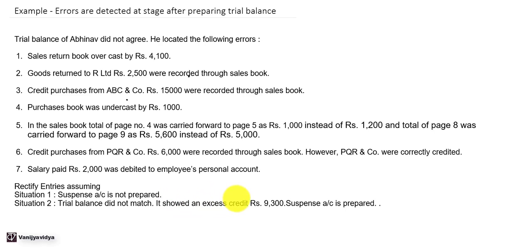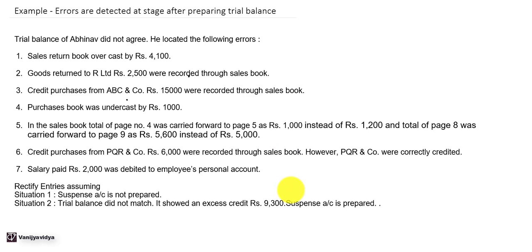It shows an excess of Rs. 9,300 on the credit side, so a suspense account is prepared. When errors are detected after preparing a trial balance, there may be two cases: first, suspense account is not prepared; second, the suspense account is prepared.